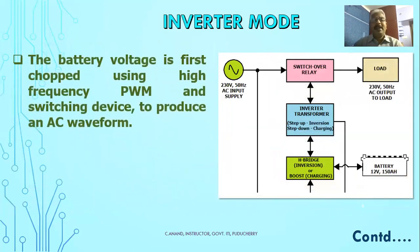The battery voltage is first chopped using high-frequency PWM and switching devices to produce an AC waveform.